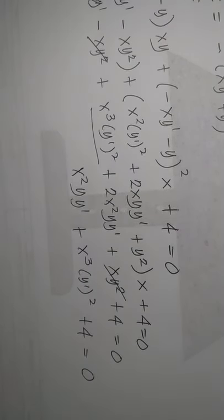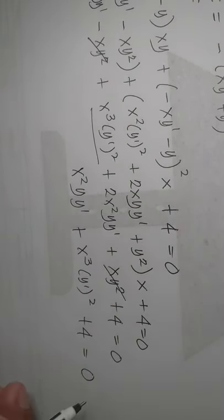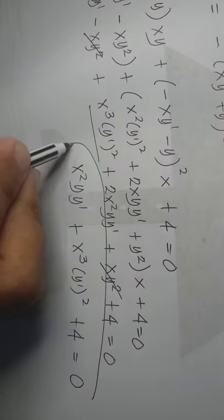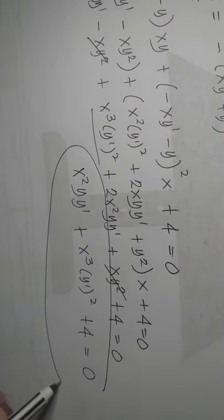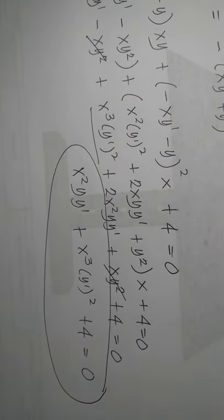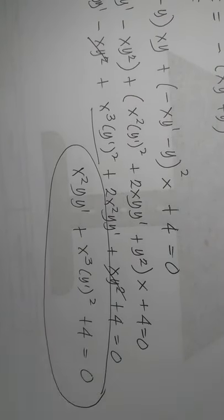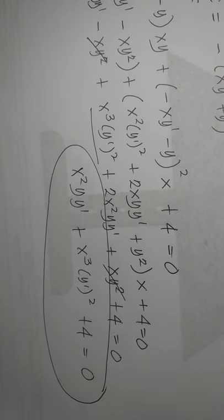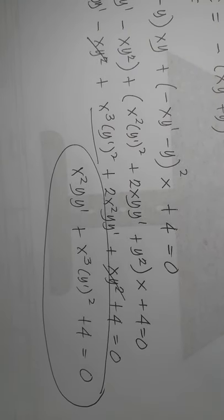So this is now an equation free of any arbitrary constant C, and this answers Example number 4. The final result is X cubed Y prime squared plus X squared Y Y prime plus 4 equals 0.